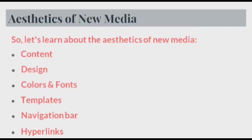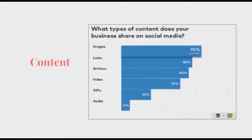Let us look at the various points that decide the aesthetics for new media: content, design, color and fonts, templates, navigation bar, and hyperlinks. As seen in the image, the majority of portions on social media constitute images, followed by hyperlinks, written words, video, GIFs, and audio.